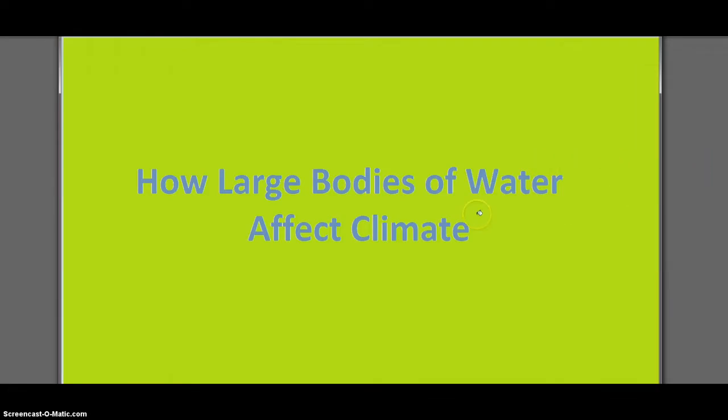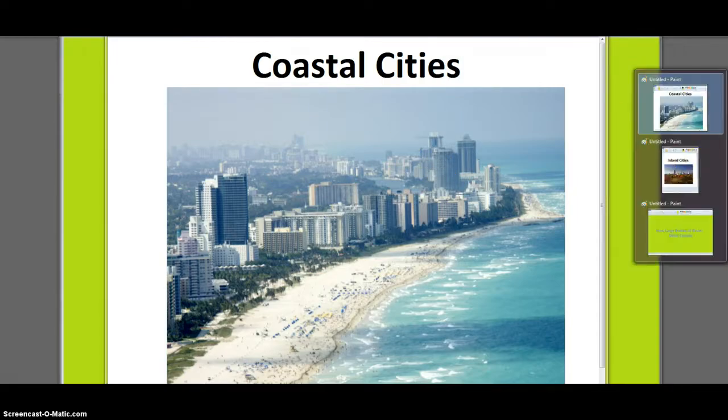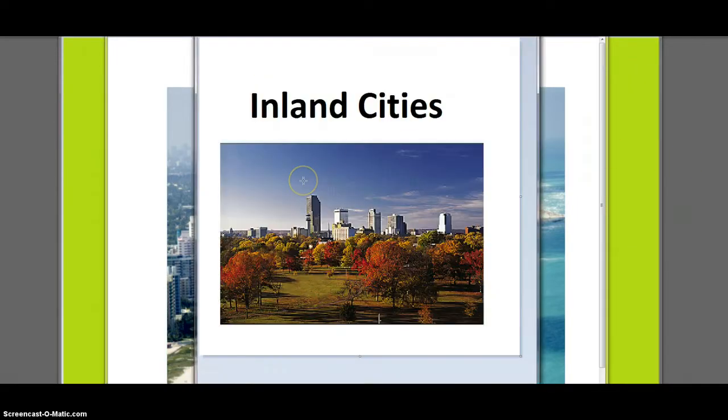For this, we are looking at two types of areas. First of all, coastal cities, so we're thinking Miami or say Vancouver for a Canadian example, and then also inland cities. So the Brantford, Hamilton area are examples, or a really good example of this would be the prairies or something like that out in Western Canada.